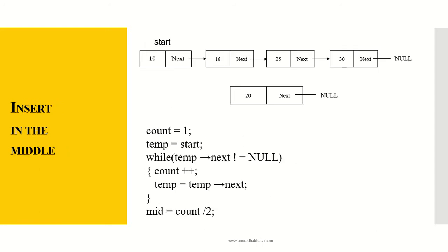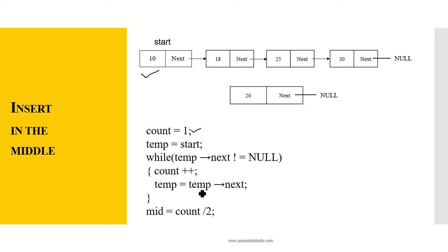Now we'll see how to add a node in the middle. Given an existing linked list, we need to add 20 at the middle. The procedure starts with count = 1 and temp = start. We first count the number of nodes: while temp->next is not equal to null, count++ and temp = temp->next. We get count = 4. Since count is initialized to 1, mid = count / 2 = 2. If count starts at 0, then mid = (count + 1) / 2. Once the middle is found, we insert node 20 at that position.